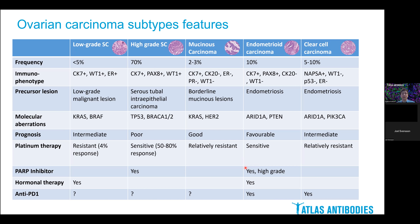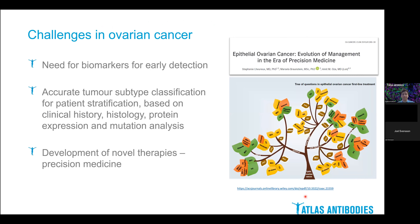Recently, PARP inhibitors have been used successfully in treatment of high-grade carcinoma. For some tumors that have high expression of hormonal receptors, such as low-grade carcinoma, hormonal therapy can be used. For tumors presenting high involvement of the immune system, anti-PD strategies can also be used, such as in clear cell carcinoma. So ovarian cancer is not a single disease and requires both understanding of new biomarkers and accurate tumor classification for patient stratification, which should be based on clinical history, protein expression, and mutational analysis — all of which will help us develop new therapies for precision medicine in ovarian cancer.